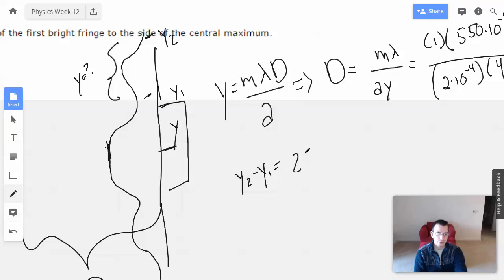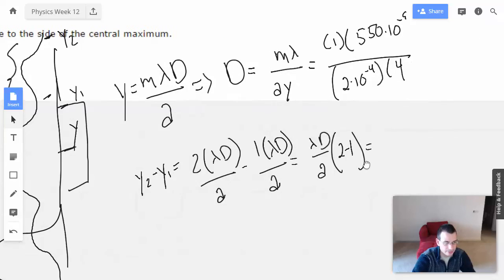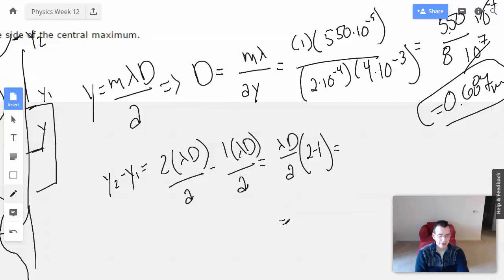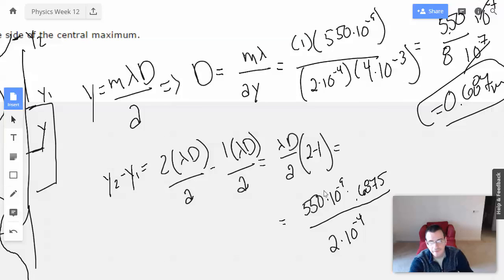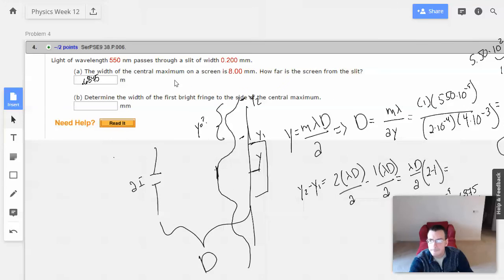So this is going to be, the first one will be 2 times wavelength. I'll just do this in terms of these symbols. Factor out pretty much everything, and we have 2 minus 1. So now we have 550 times 10 to the negative 9th times 0.6875 divided by aperture, which is 2 times 10 to the negative 4th.